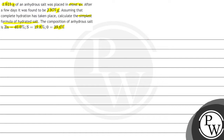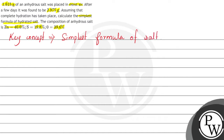What do we need to find out here? We need to find out the simplest formula of the hydrated salt. The key concept used in this question is the simplest formula of a salt. To find the simplest formula of a salt, we have to find the simplest whole number ratio of the atoms present in the molecule or compound. First, we need to see what elements are present. The elements present are zinc, sulfur, and oxygen.